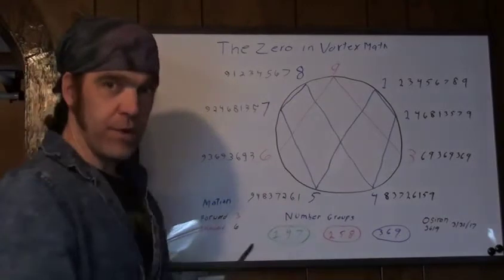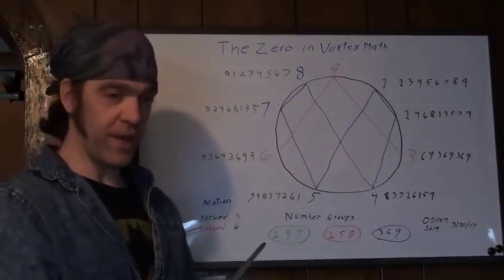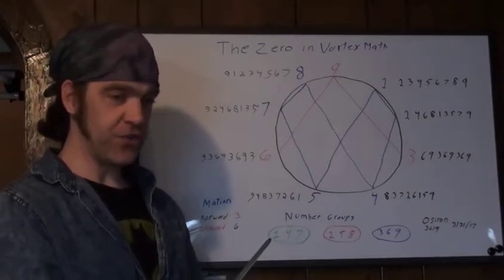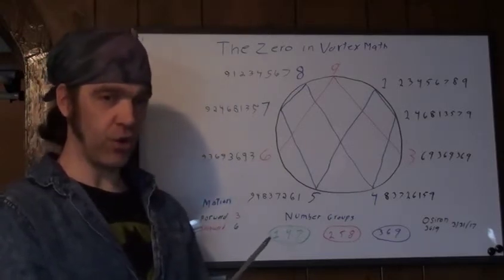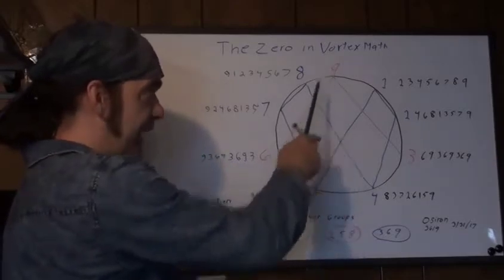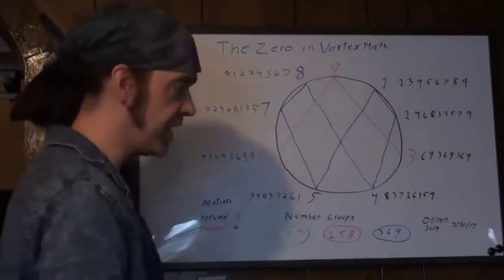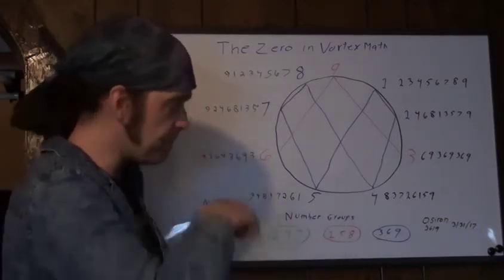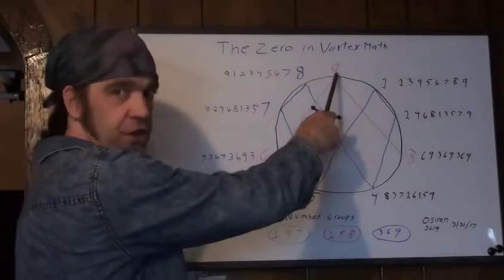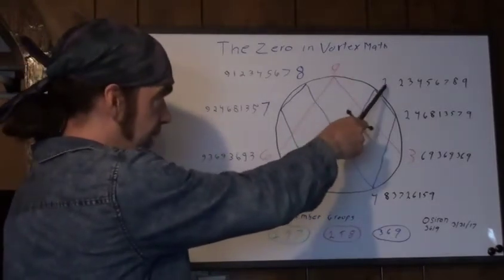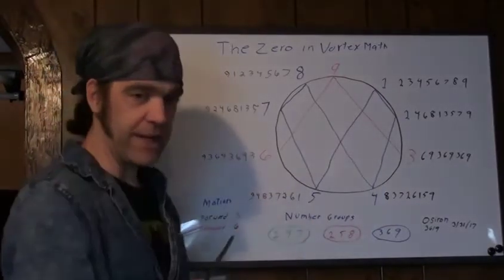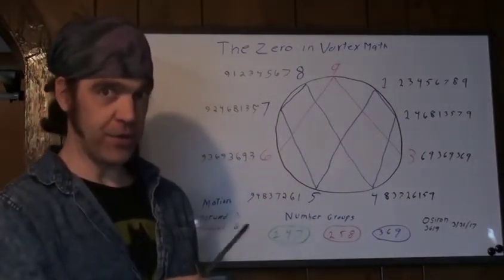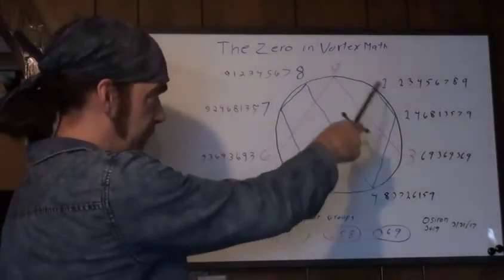But in the construction of this, the zero is implied by the position of the one right there, because there's only one other number in the single digit code that has the right and authority to take the place of zero and have all the powers of zero, and that is nine. Because when you see the construction, if you were going to build this from nothing, from zero, you acknowledge zero at the top, then you put one over on the side.